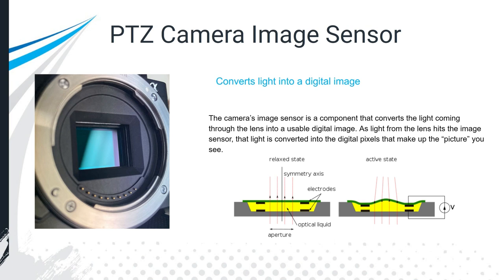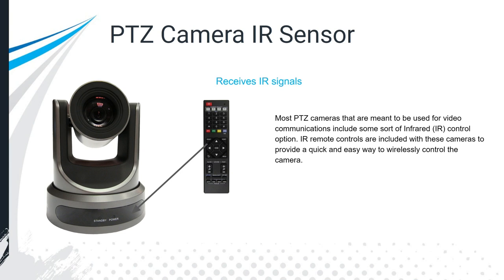The image sensor takes the light from the lens and converts it into a digital image. The light hits the sensor and is converted into digital pictures. CMOS sensors have truly become the standard in the industry. Between the lens and the image sensor, those are the two big limiting factors for image quality — they affect image quality the most.